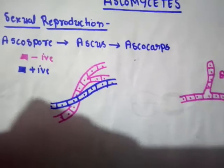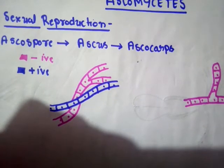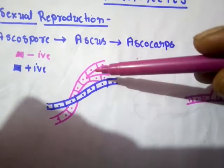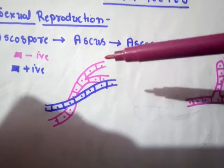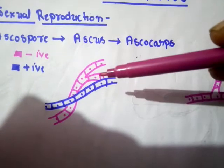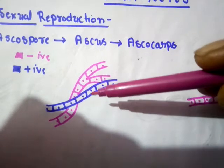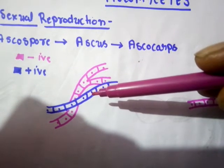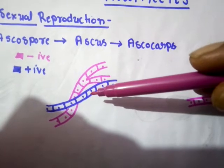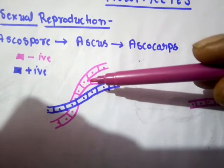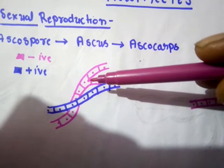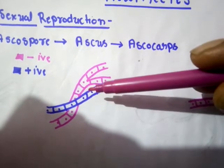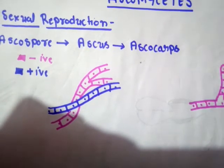In the mycelium of Penicillium, you can see the branched and septate hyphae. There are two kinds of hyphae: the positive strain hyphae, equivalent to the male strain shown in blue color, and the negative strain hyphae, equivalent to the female strain. So both kinds of hyphae — male hyphae and female hyphae — are present in the mycelium.